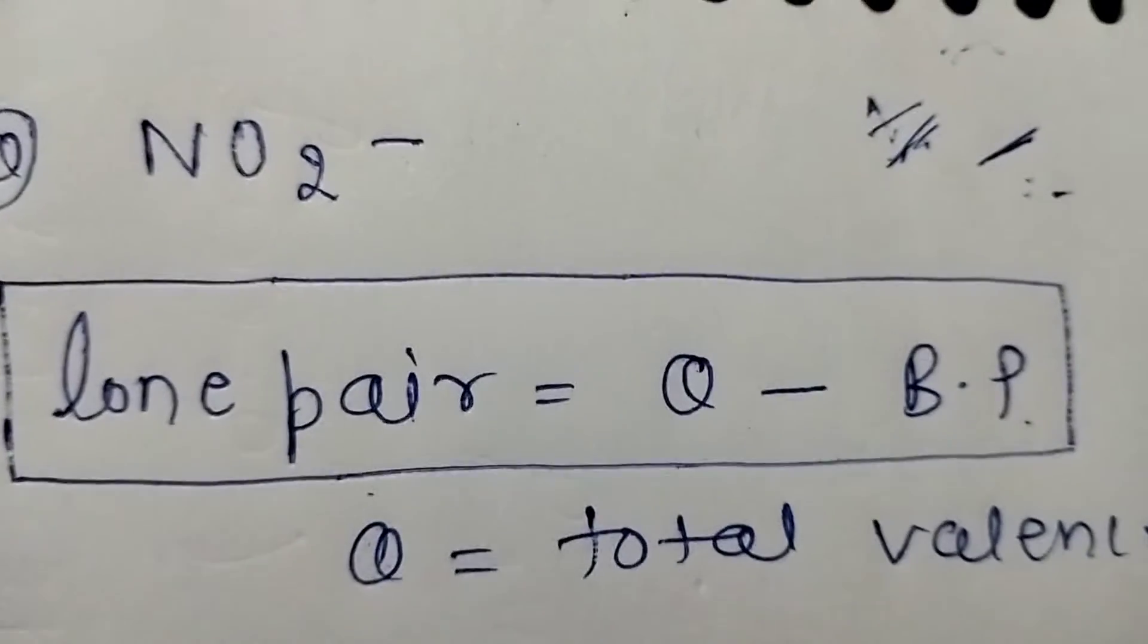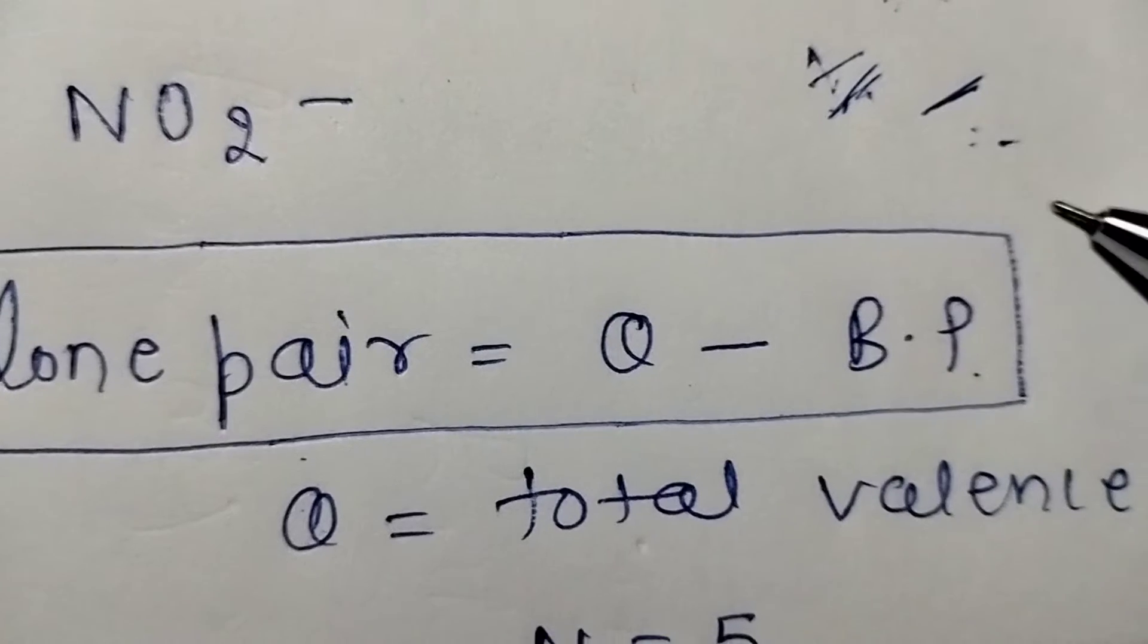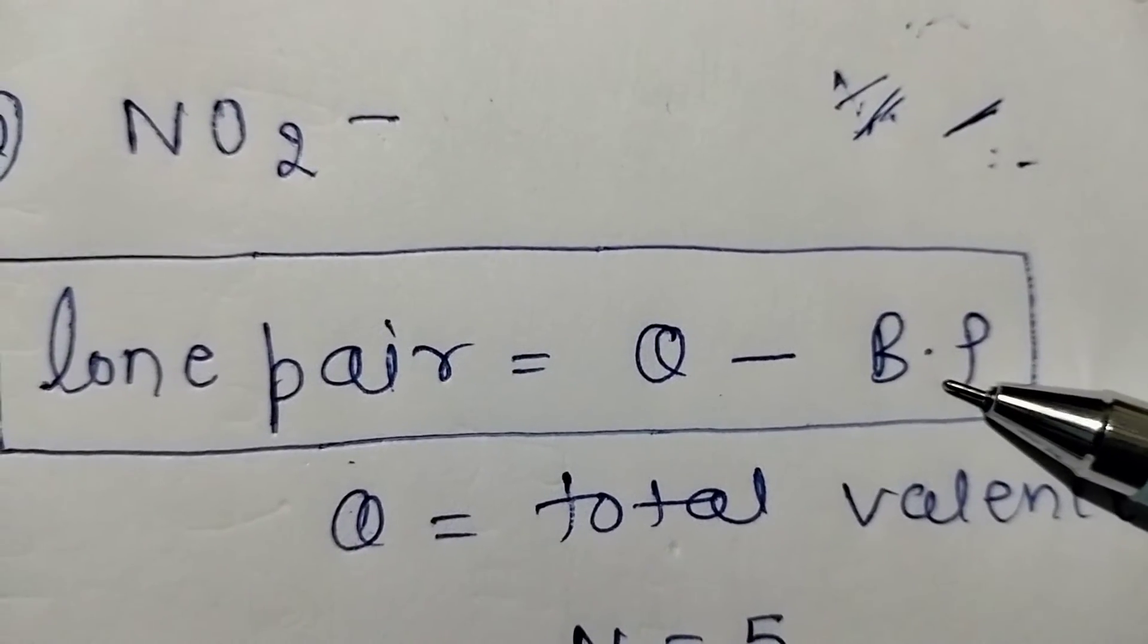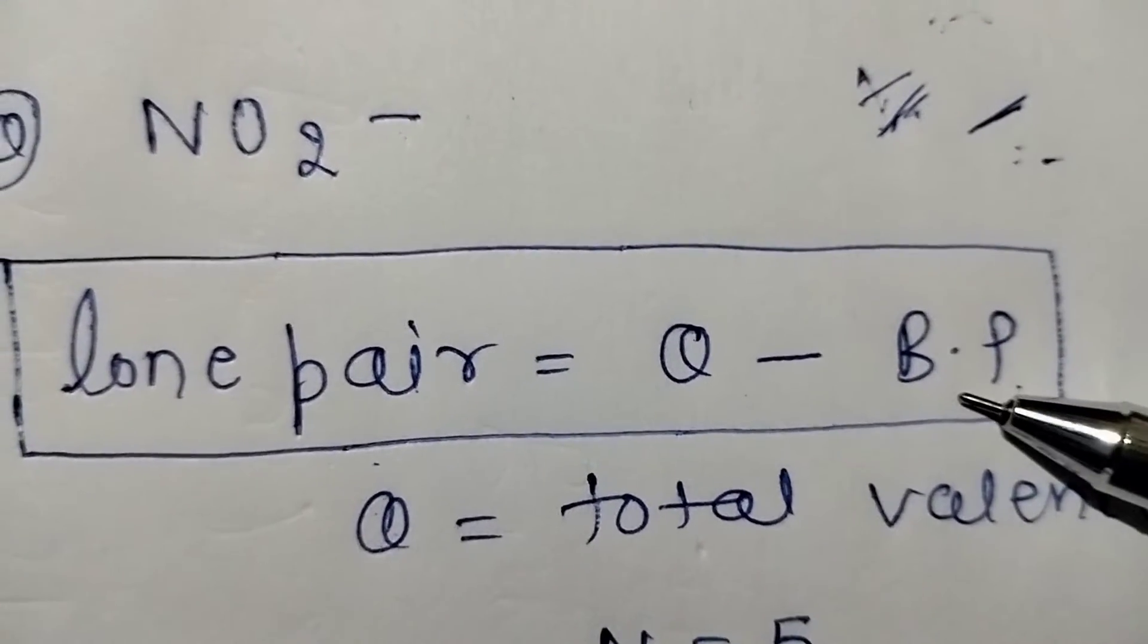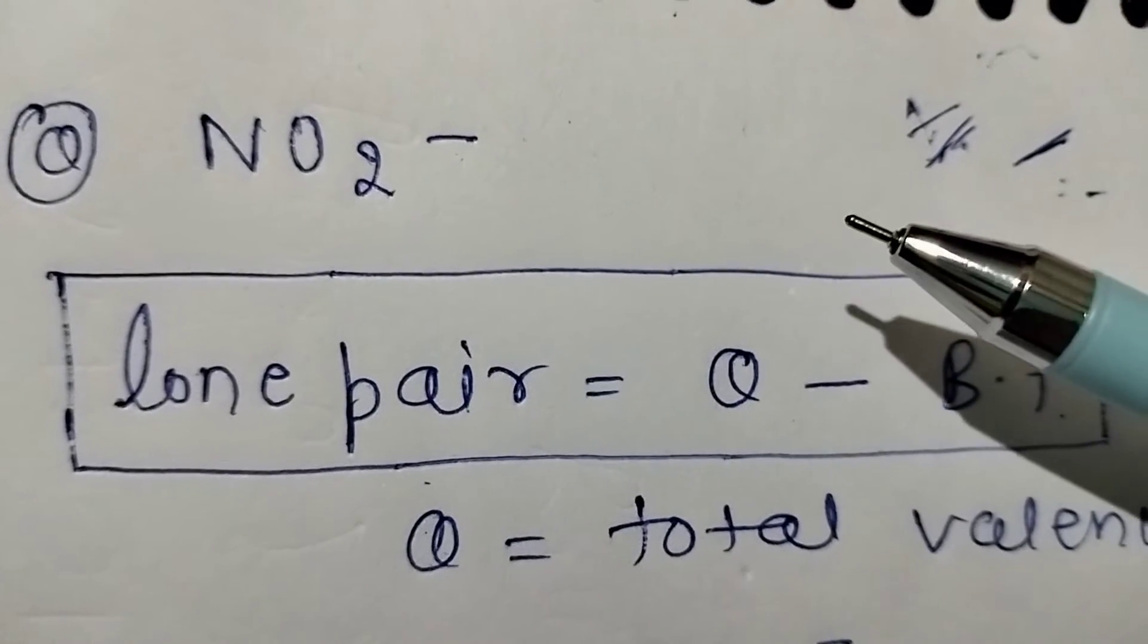Next one, according to the formula, we will find out the bond pair. So how to know how many bond pairs are present in this molecule?